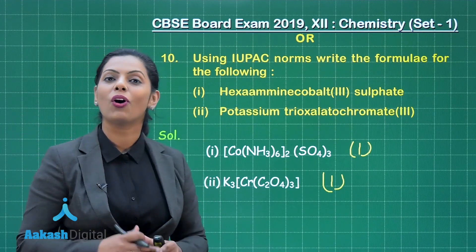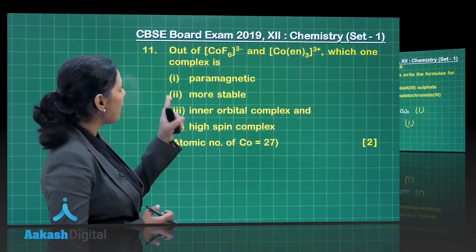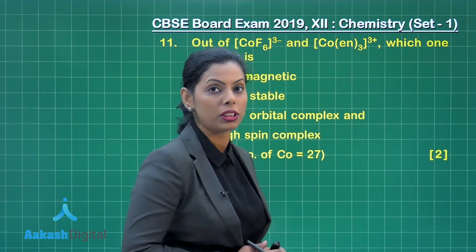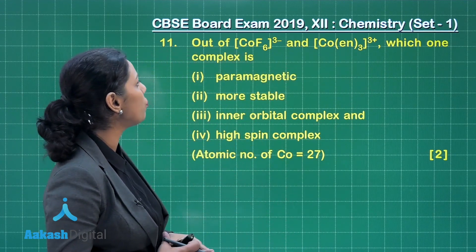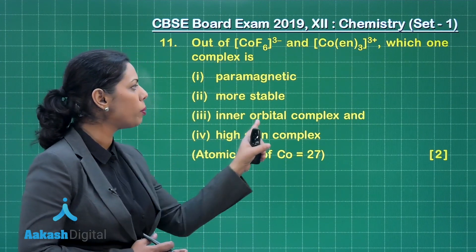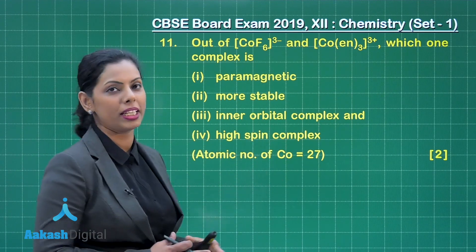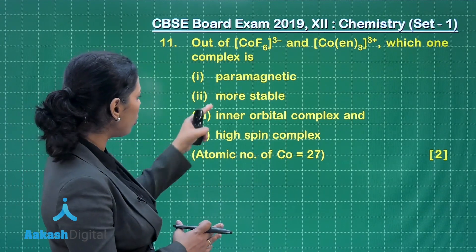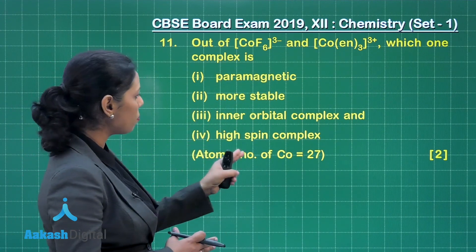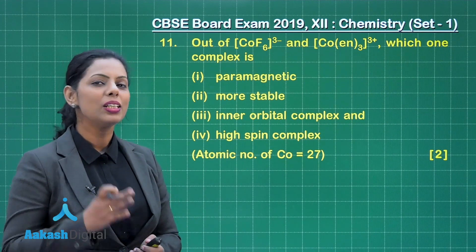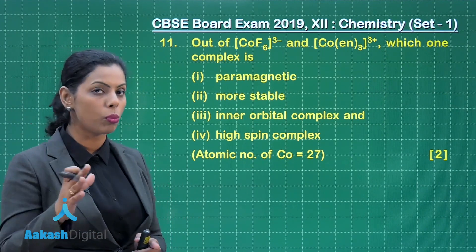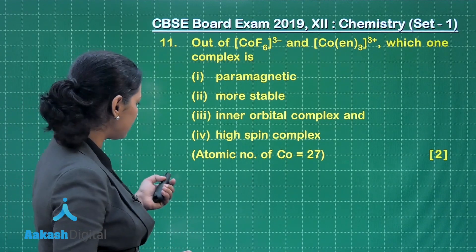Next is question number 11. Out of the complexes [CoF₆]³⁻ and [Co(en)₃]³⁺, you have to find out which complex is paramagnetic, more stable, inner orbital complex, and high spin complex. The atomic number of cobalt is given for convenience. We solve this by first writing the electronic configuration of cobalt.